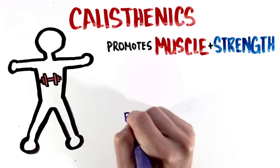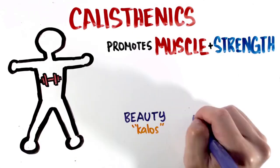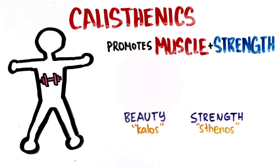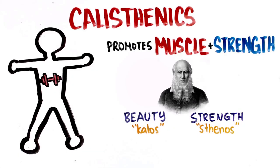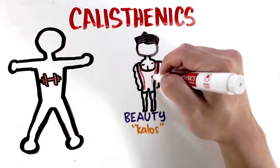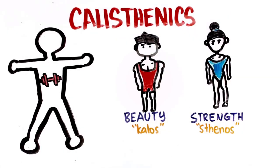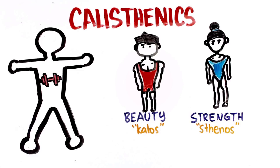Originating from the Greek words kalo, which means beauty, and stenos, which means strength, calisthenics rose into prominence in the 19th century by the father of gymnastics, Friedrich Ludwig Jahn. And fittingly enough, there's nothing that is a better embodiment of beauty and strength than gymnastics.